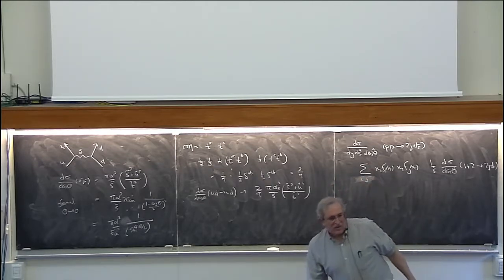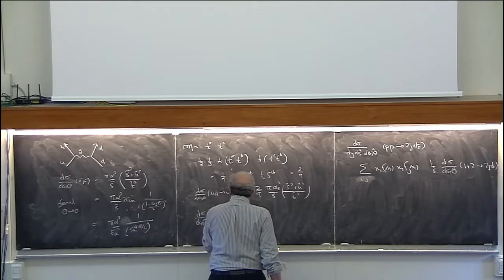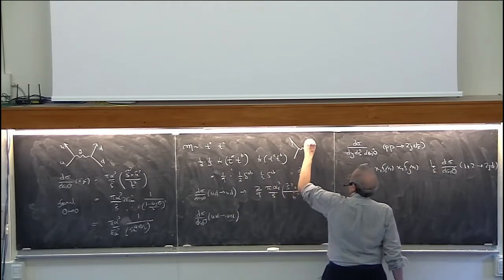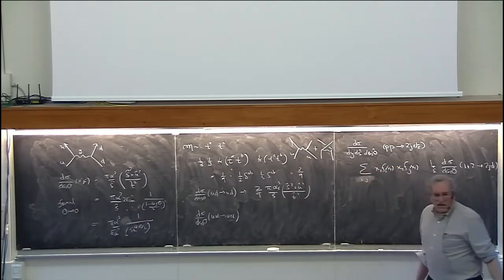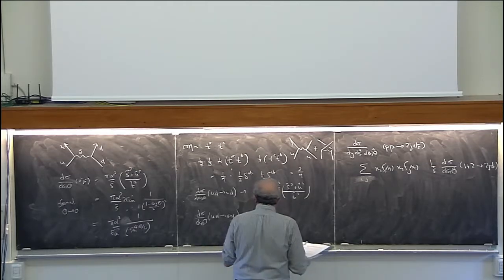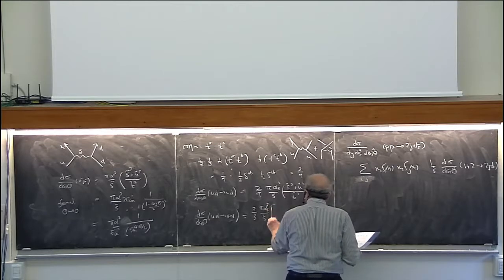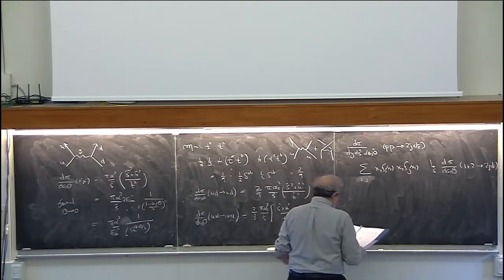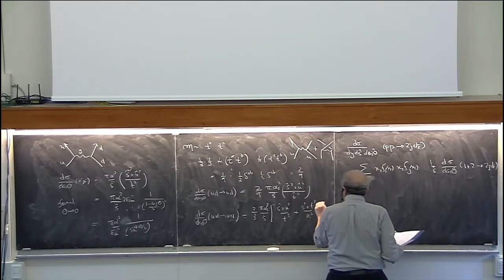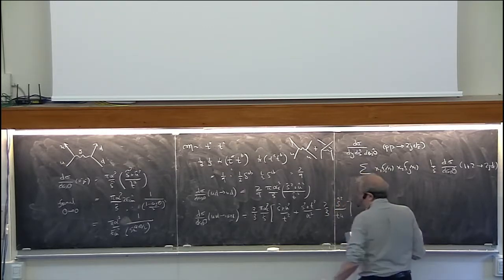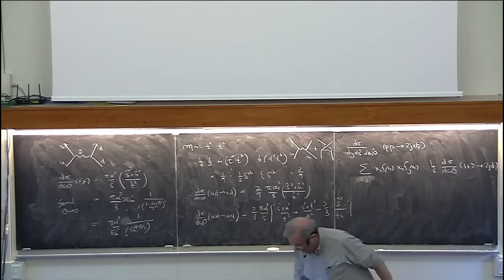So d sigma / d cos theta for U-D quark scattering is that QED expression times two-ninths, with alpha substituted with alpha_s, and nothing else changed. You have to work a little harder if you have identical quarks, because now there are two diagrams that interfere with each other. That gives: 2/9 times alpha_s squared over S-hat, times (S squared plus U squared) over T squared plus (S squared plus T squared) over U squared, plus an interference term which is minus two-thirds times S squared over TU.